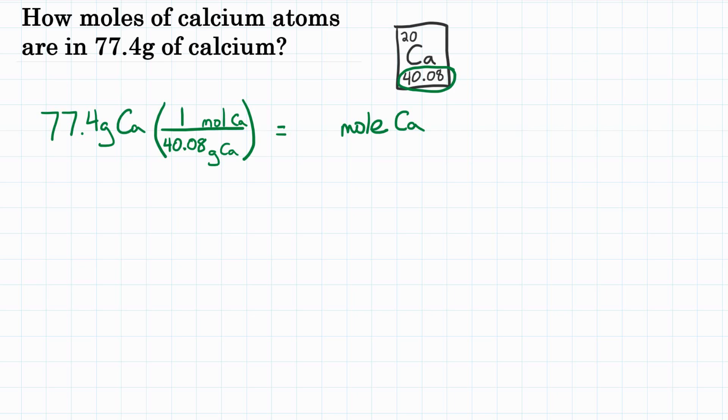So we plug that in, and we do our math. So in our calculator, we will put 77.4 times 1, or the top of the fraction, if you so choose. It doesn't really change anything. But more importantly, divide it by the bottom, which is 40.08. And when we solve that, we get 1.93 moles.